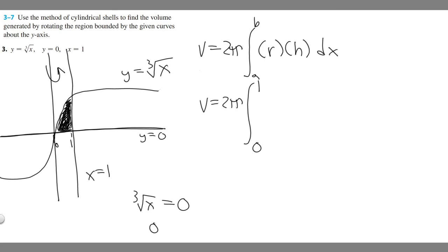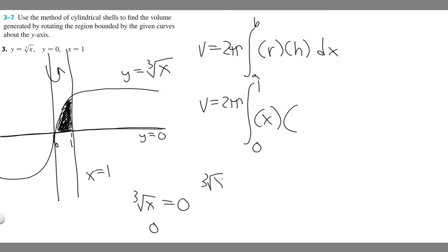The radius, whenever you rotate around the y-axis, is always going to be x. If you're rotating around a different vertical line it will be different, but for the y-axis the radius is x. For a horizontal or x-axis rotation it would be y. Now for the height: imagine you're finding the area between two curves — you take the top curve minus the bottom one. Here our top curve is the cube root of x and our bottom one is zero. So the height is cube root of x minus zero, which is just cube root of x.